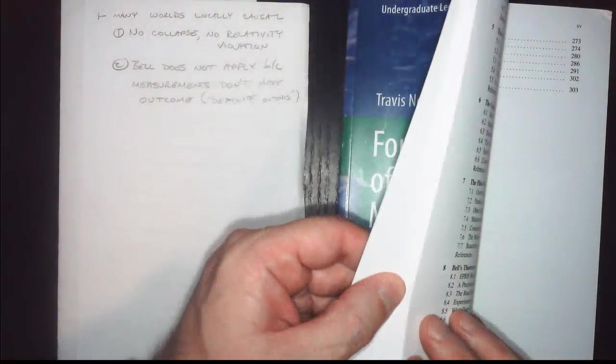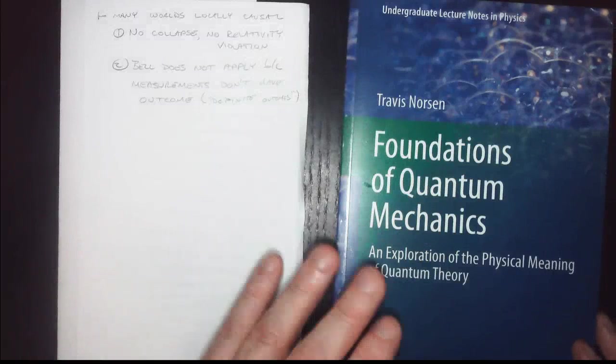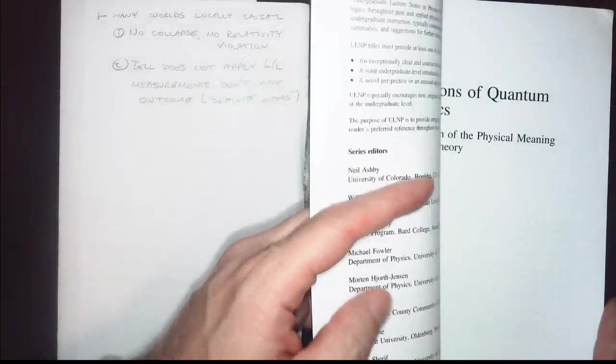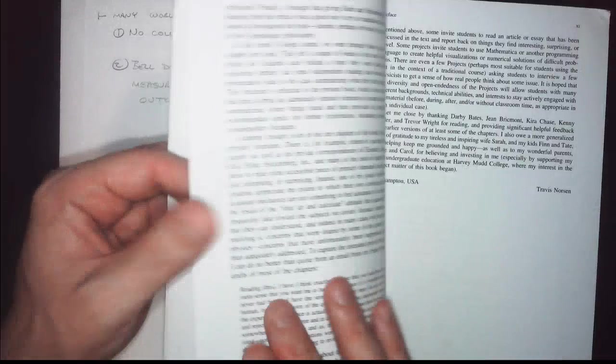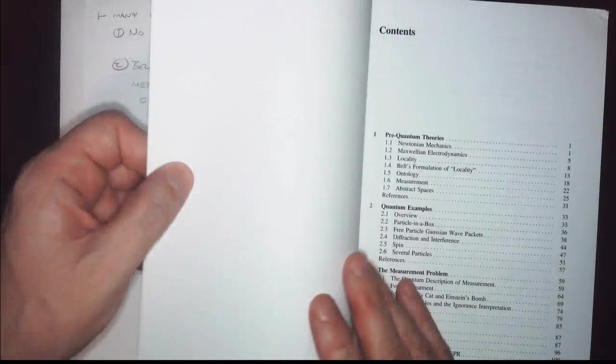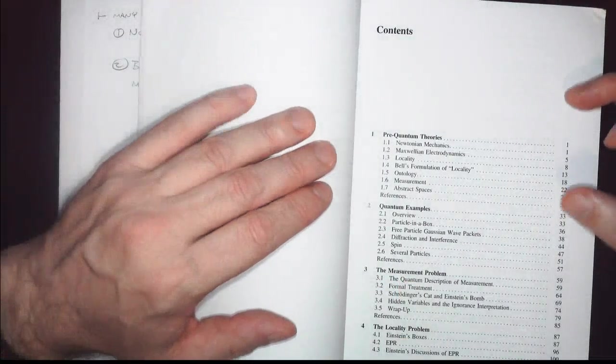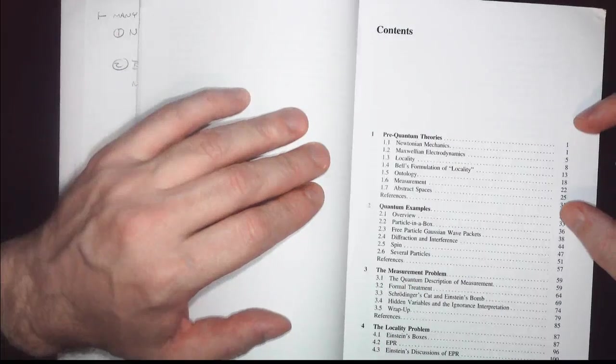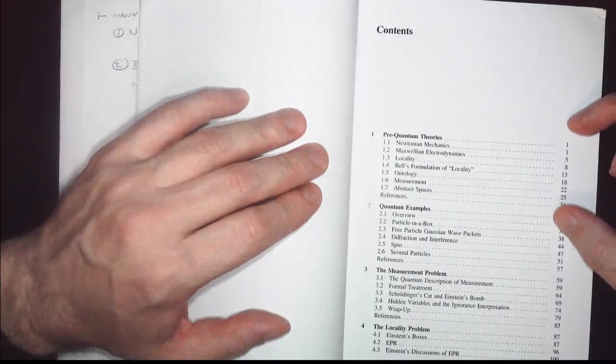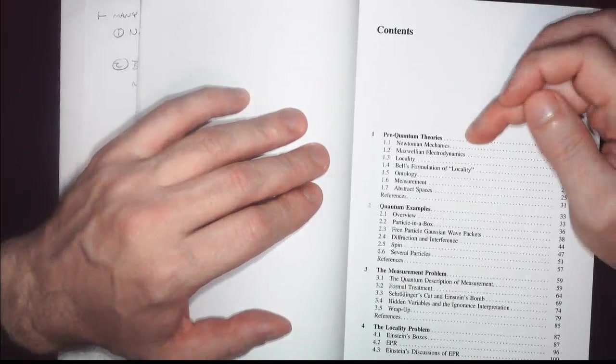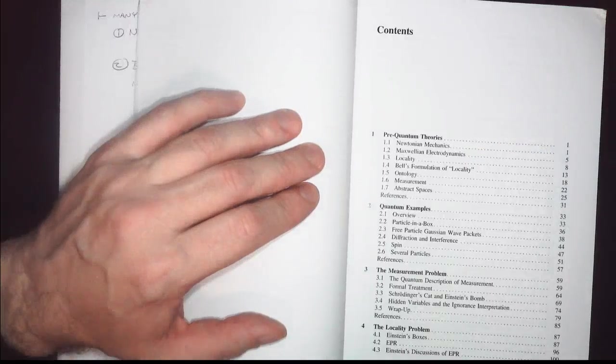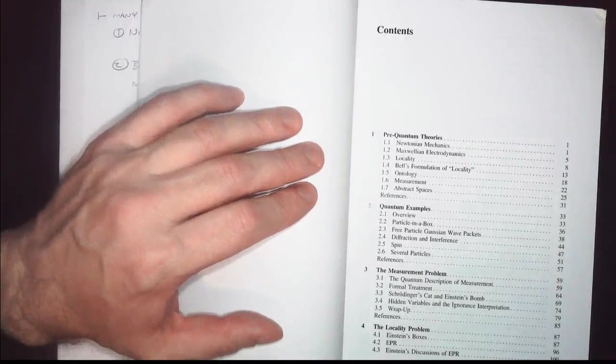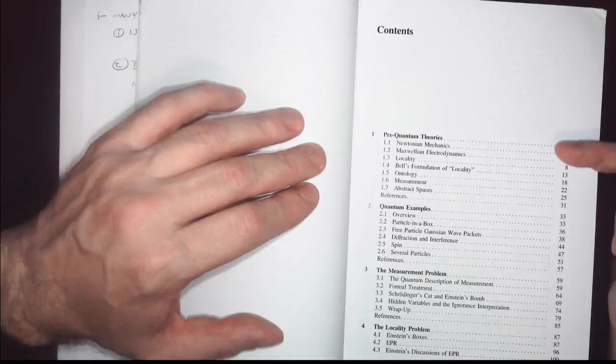This book does spend a lot of time with interpretations of quantum mechanics. It is strange. People do spend a lot of time talking about those interpretations. As usual, we go through the contents, and first we'll talk about pre-quantum theories, Newtonian mechanics. You'll notice that physicists start physics with Newtonian mechanics, with Newton.